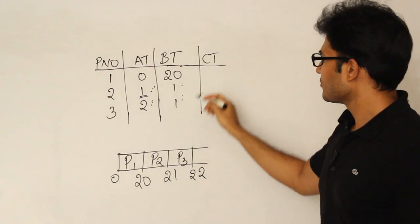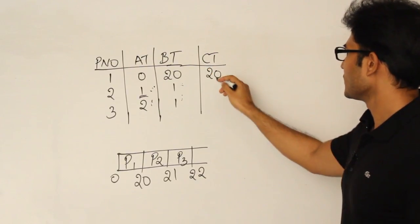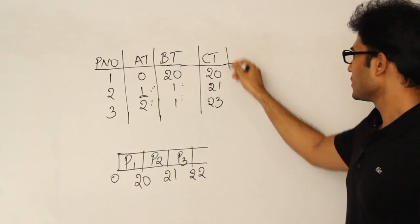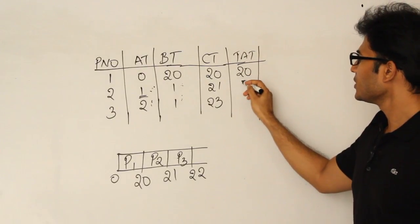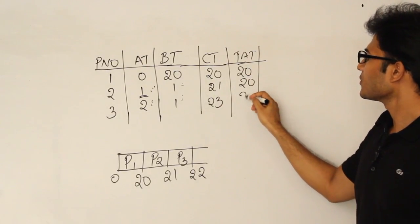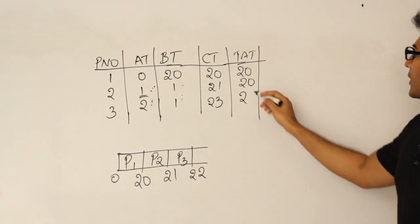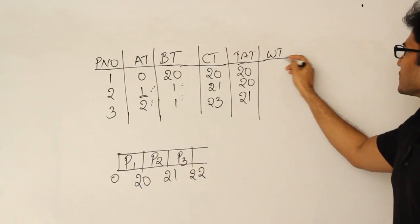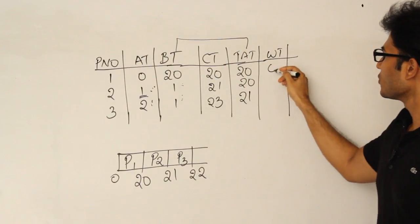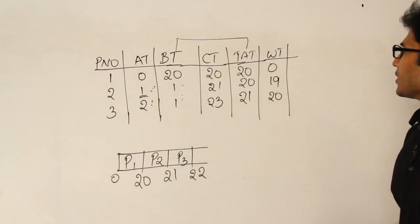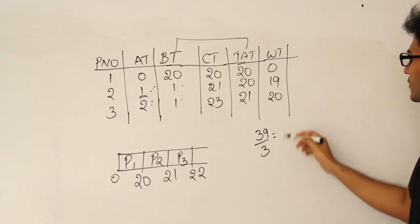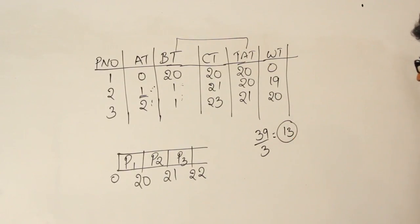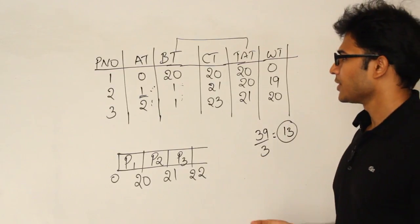The completion times are: P1 = 20, P2 = 21, P3 = 22. Turnaround times are the difference between completion time and arrival time: 20, 20, and 21. Waiting time is turnaround time minus burst time: 0, 19, and 20. Therefore the average waiting time is 39 divided by 3, which is 13.